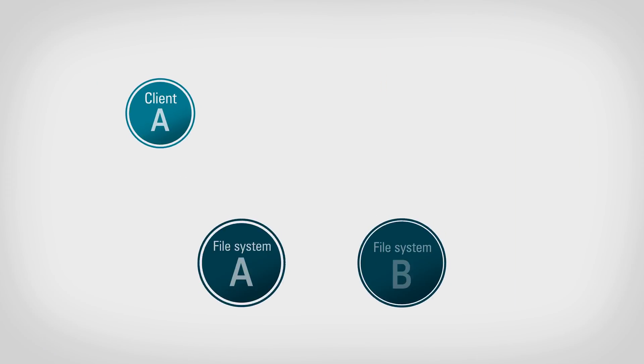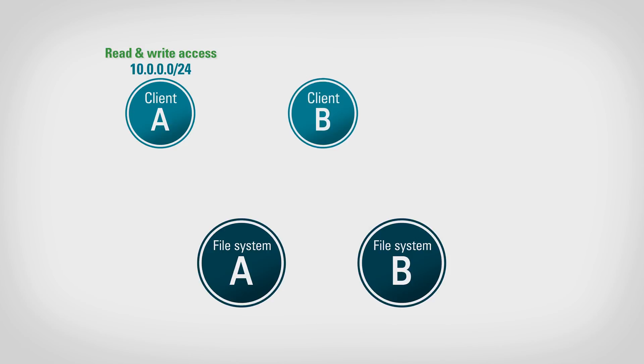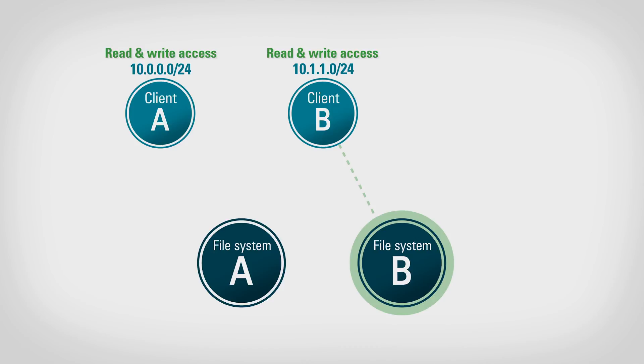Let's do a couple of examples here to demonstrate how these export options work over the CLI. Let's say we have three clients sharing one mount target, but each have their own file system. In this scenario, we want to set them up so that they cannot access each other's data. Client A is assigned to CIDR block 10.0.0.0/24 and should have read and write access to file system A, but not file system B. Client B is assigned to CIDR block 10.1.1.0/24 and should have read and write access to file system B, but not file system A.